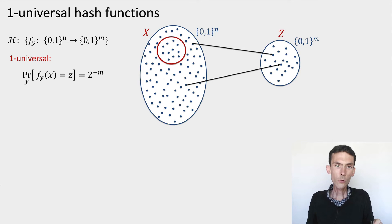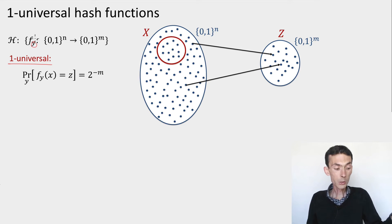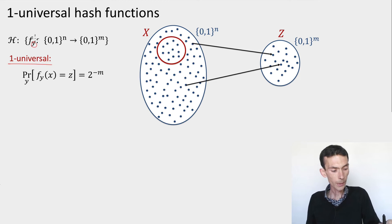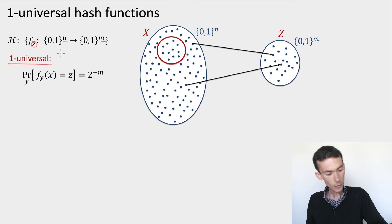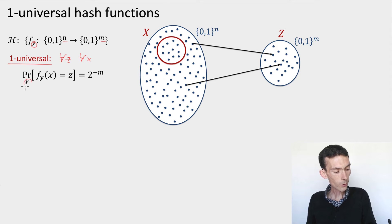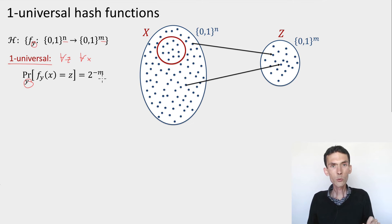Here's the first basic notion: a one-universal family of hash functions. These hash functions are parameterized by an index y, where y ranges over the set of indices over which the family is defined. They map n bits to m bits. The family is called universal if for every output z and every input x, the probability that a random function from the family maps x to z is 2 to the minus m. This guarantees that if I choose a random function, whatever the input, it's mapped to a uniformly random output.